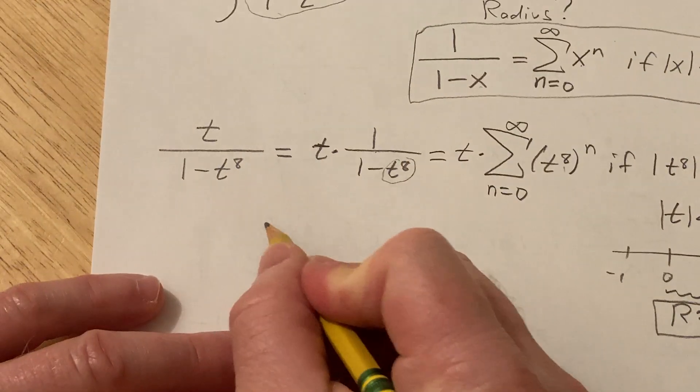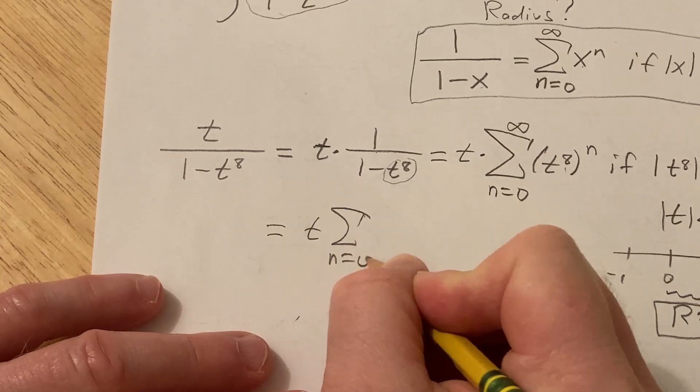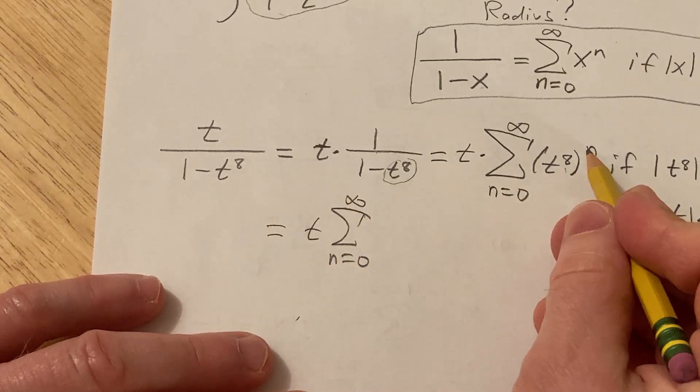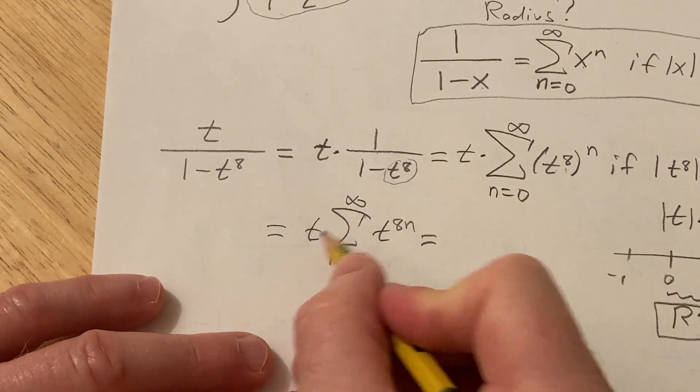So let's keep going here. This is equal to t times the infinite sum as n runs from zero to infinity. Here you multiply so it's t to the eight n.